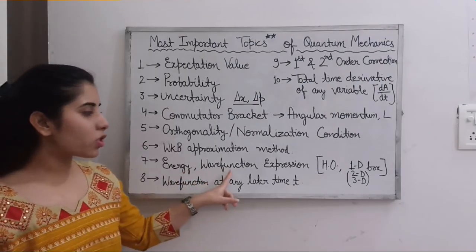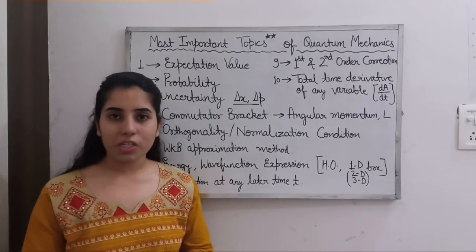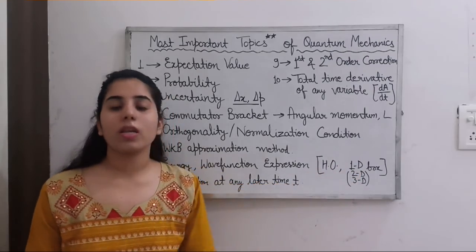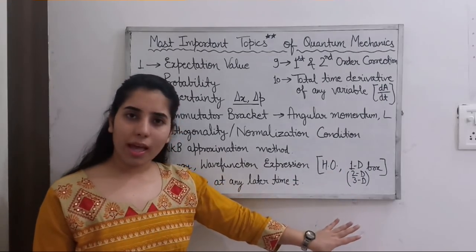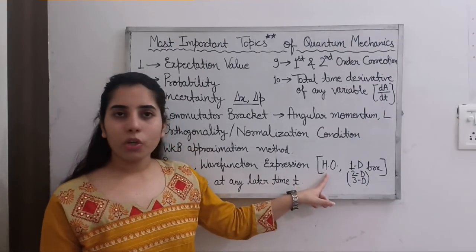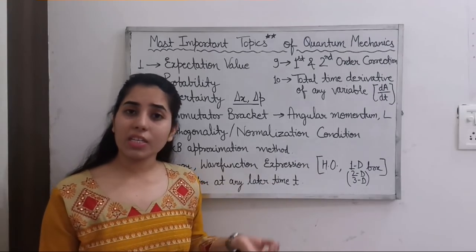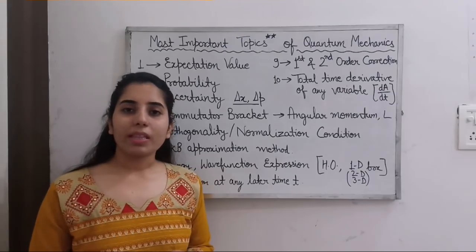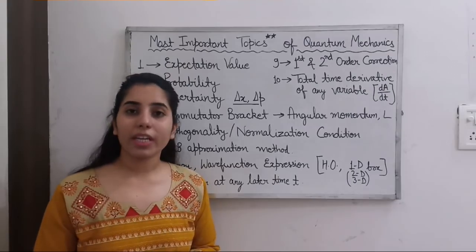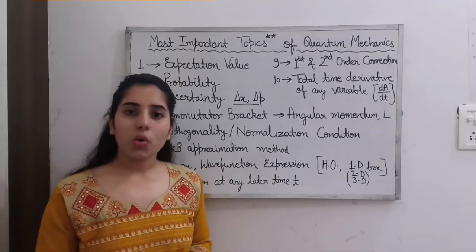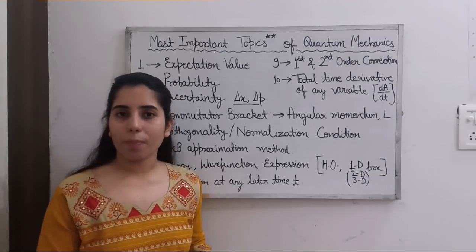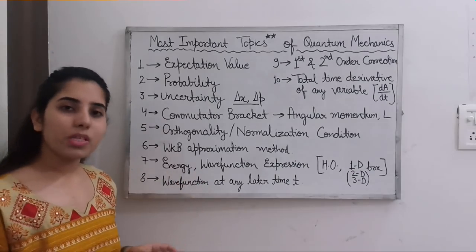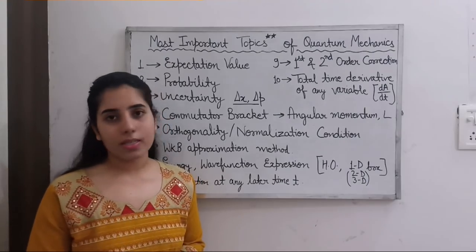The next topic is energy and wave function expressions. You mainly need to know these for two systems: the harmonic oscillator and the particle in a box — one-dimensional, two-dimensional, and three-dimensional. Similar kinds of expressions apply for 1D, 2D, and 3D. For the harmonic oscillator we have a specific expression, and there is also the anisotropic harmonic oscillator. These are the important systems, though there will be some others as well. If you are familiar with the energy and wave function expressions for these topics, it will be very helpful in solving questions. Sometimes direct questions are based on those expressions, and knowing them will make those questions very easy to answer.